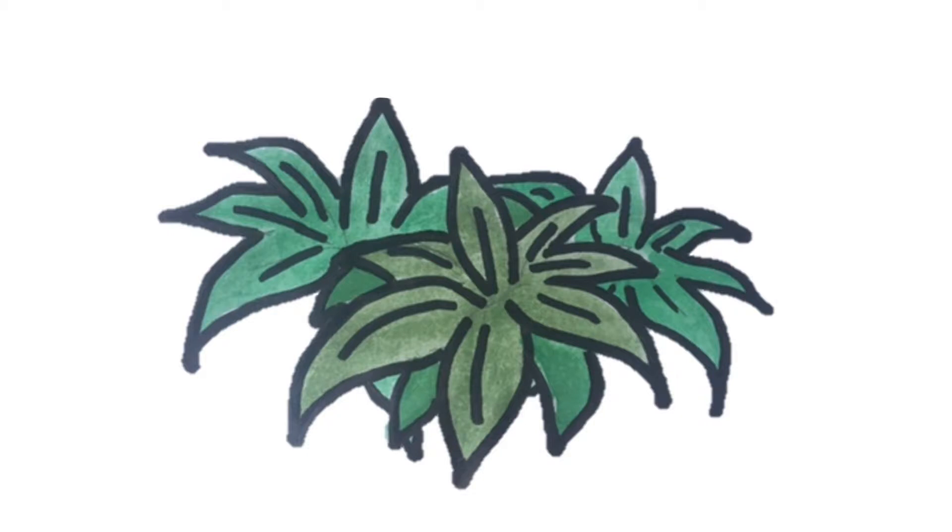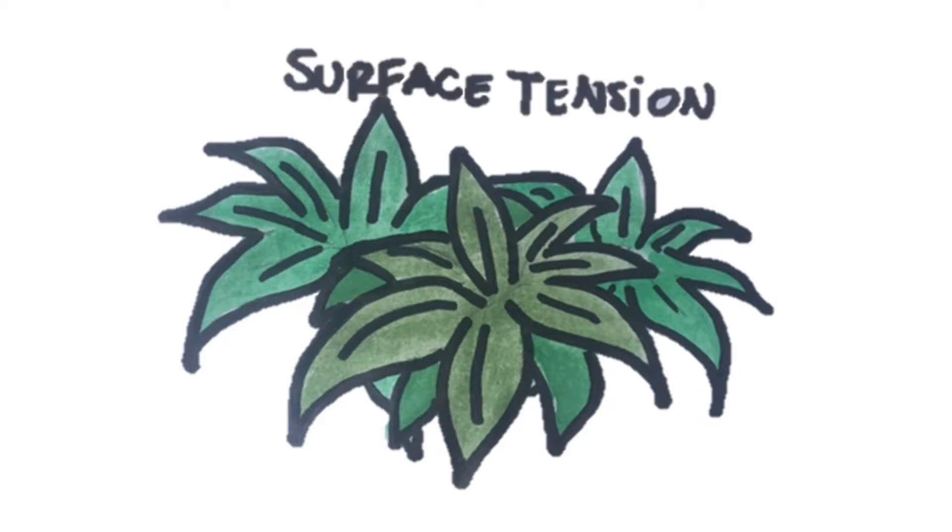For example, here on Earth, plants use three factors to get water from the roots up to the leaves: surface tension, adhesion, and cohesion.